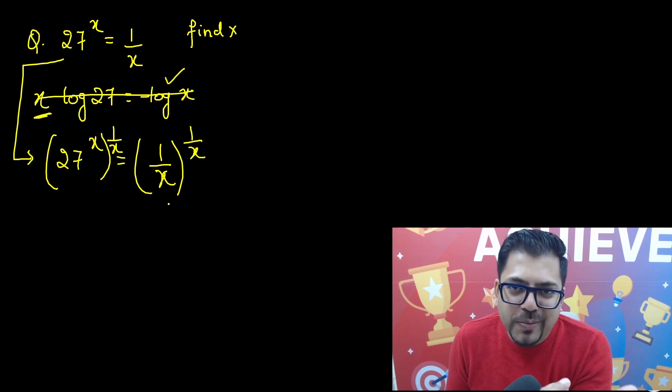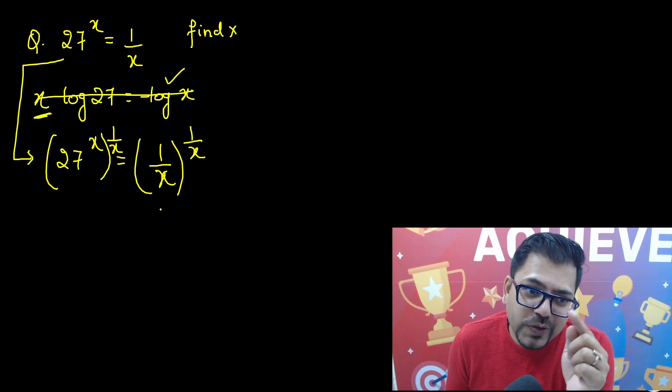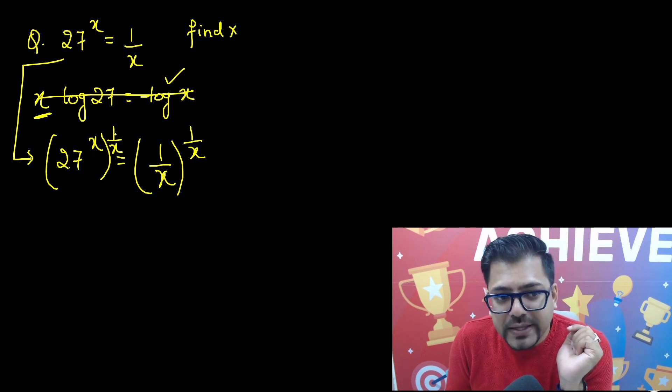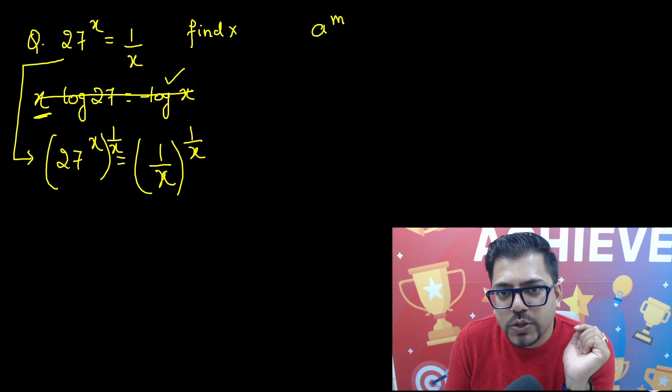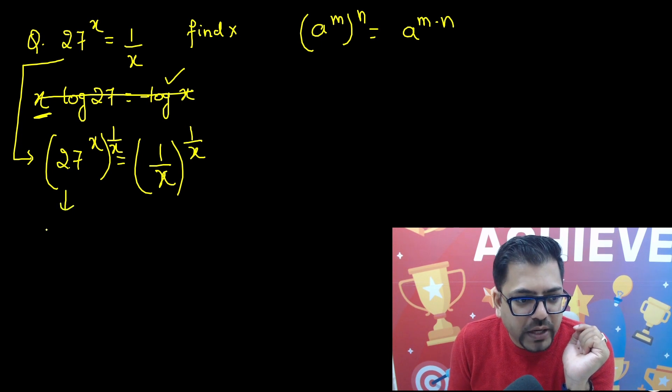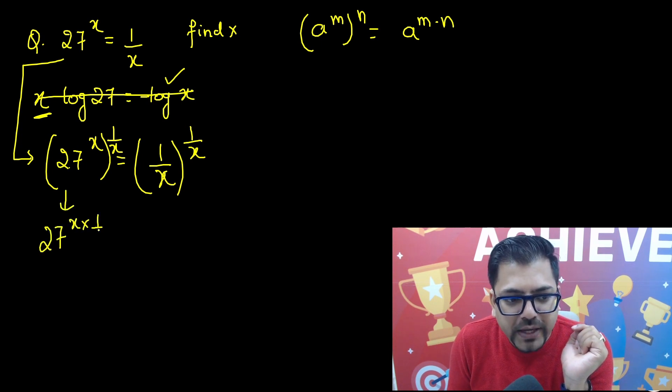Benefit as you are able to understand that in the previous video, we have done this type of question. So here 27 raised to power x into 1 by x. So you know the property a raised to power m whole raised to power n will become a raised to power m into n. So the same way here it will become 27 raised to power x into 1 by x.